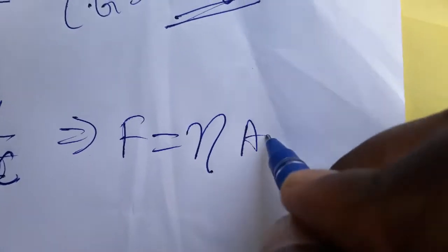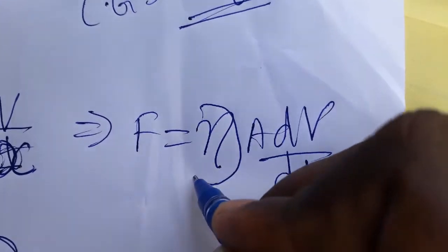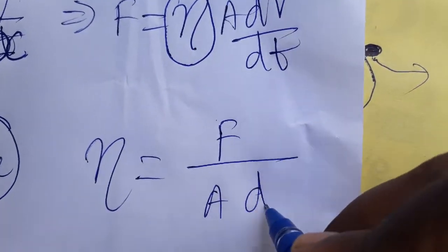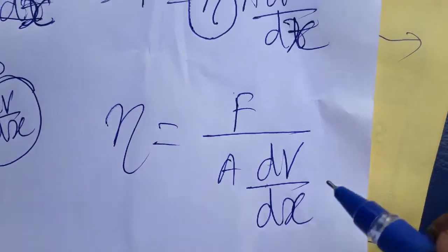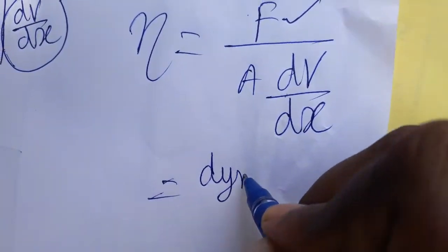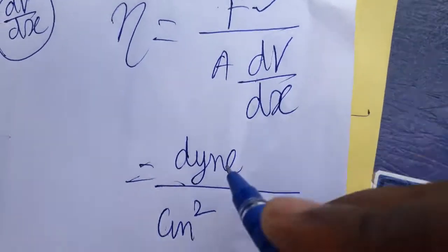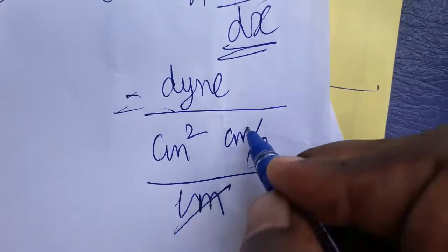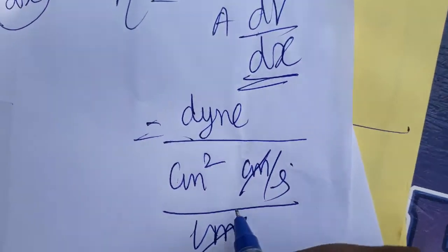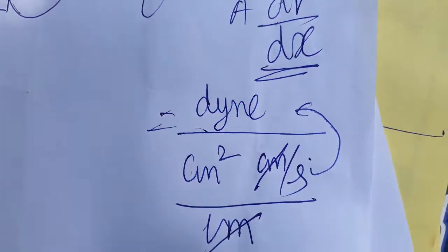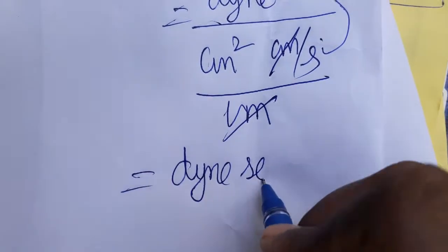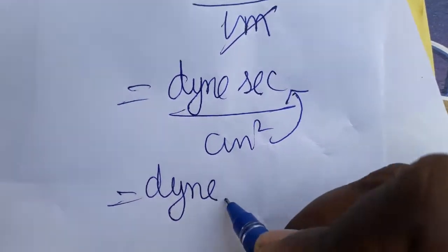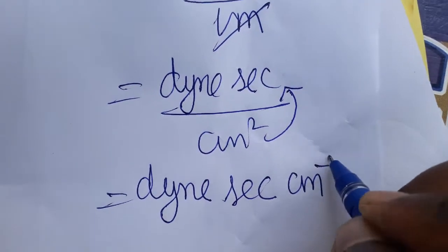The equation is F = η × A × (dv/dx), where η is the proportionality constant called coefficient of viscosity. So coefficient of viscosity η = F / (A × dv/dx). In CGS: force is in dyne, area is in centimeter squared, velocity is in centimeter per second, and distance is in centimeter. Simplifying, we get dyne·second per centimeter squared — that is, dyne·s·cm⁻².